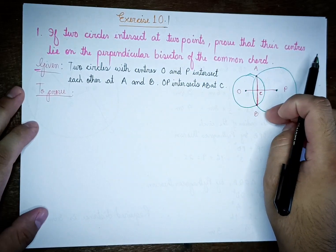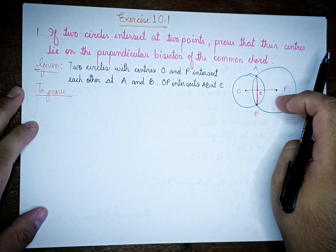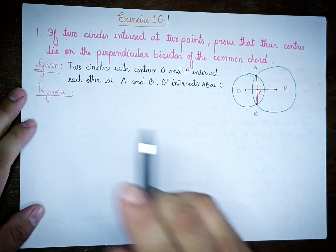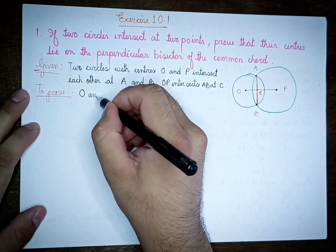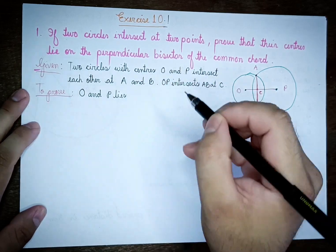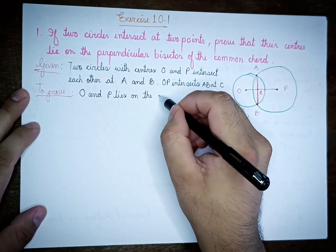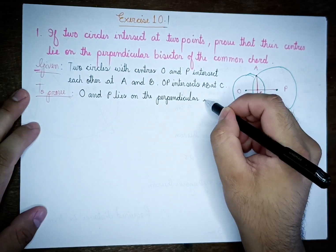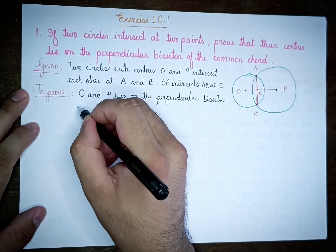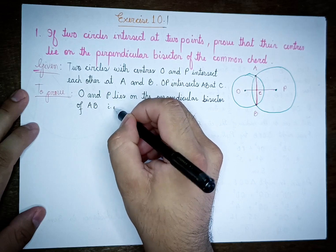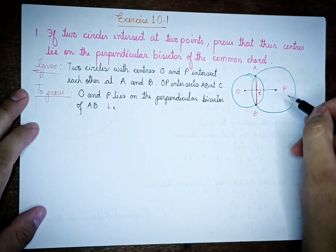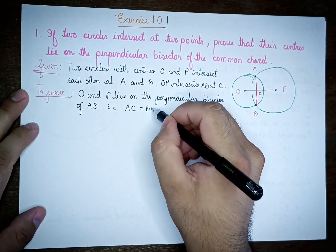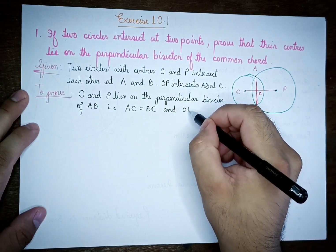The perpendicular bisector of the common chord — so centers O and P. We have to show that center O lies on the perpendicular bisector of AB, and center P also lies on the perpendicular bisector of AB. That is what we call the line OP with respect to AB.